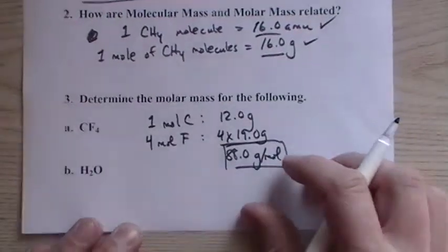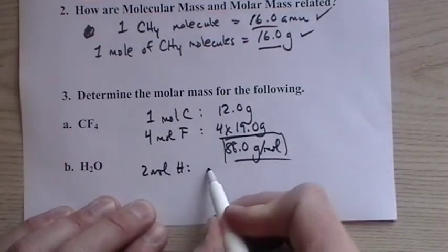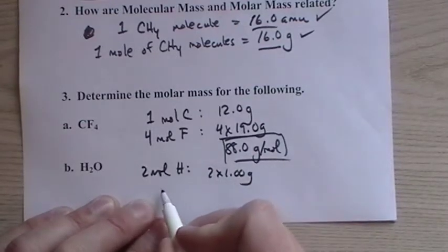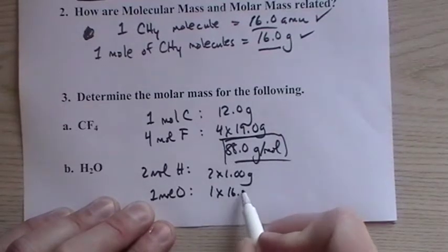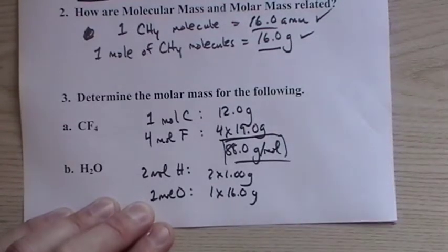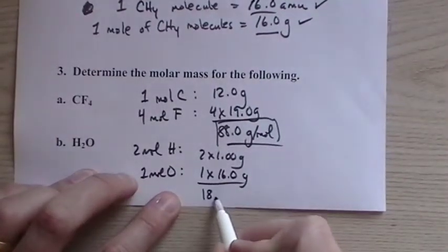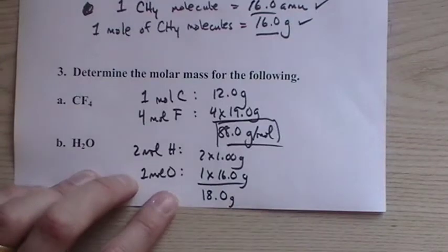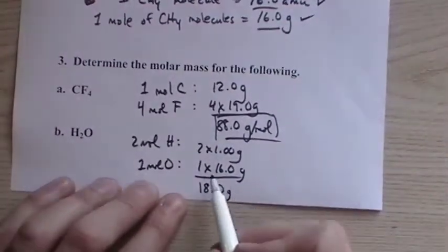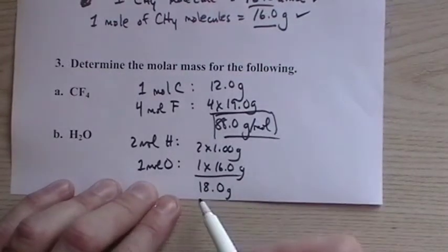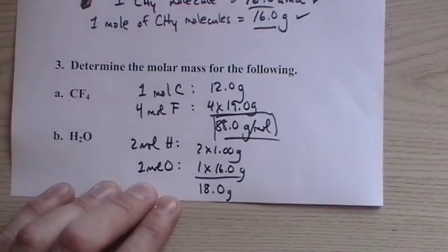Water, same thing here. One mole of water is two moles of hydrogen, two times one, and one mole of oxygen. If you want to use 1.01 for hydrogen, feel free. You're going to find 99% of the time it won't have any effect on the answer if you go to three significant figures. So molar mass, one mole of water is 18 grams. One molecule of water is 18 AMU.